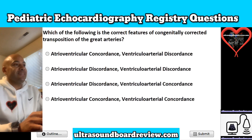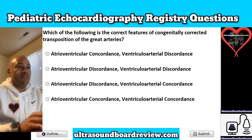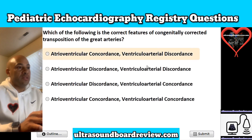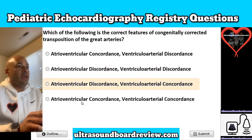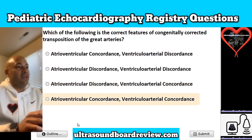Question 6. Which of the following is the correct features of congenitally corrected transposition of the great arteries? Is it A, atrioventricular concordance along with ventriculoarterial discordance; B, atrioventricular discordance along with ventriculoarterial discordance; C, atrioventricular discordance along with ventriculoarterial concordance; or is it D, atrioventricular concordance along with ventriculoarterial concordance?